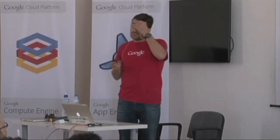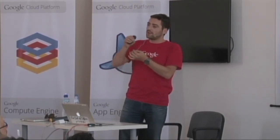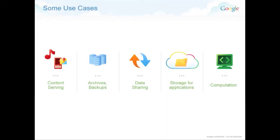Archive backups — that's quite obvious. Data sharing: you can share an object to any Google account directly in a very secure way. For example, companies in the cinema industry who want to share original movie files will store and exchange them from New York or Hollywood to Europe directly using cloud storage, because it's very secure and very fast.